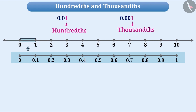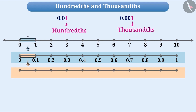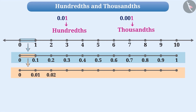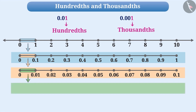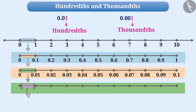Similarly, if we zoom in again, we can divide the distance between zero and 0.1 into ten equal parts — dividing zero to one into a total of one hundred parts. This allows us to represent numbers with hundredths place, like 0.01, 0.02, 0.03, etc. In the same way, we can divide the distance between zero and 0.01 into ten equal parts, where each part is a thousandths part, representing numbers like 0.001, 0.002, 0.003, etc.